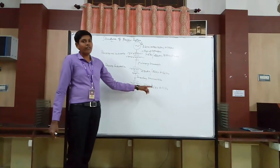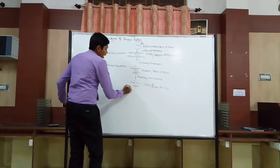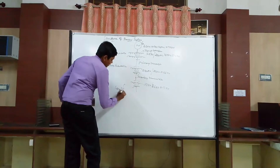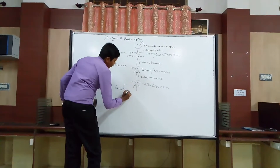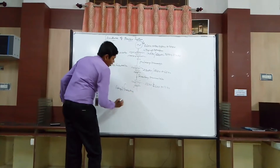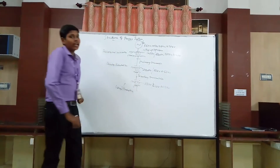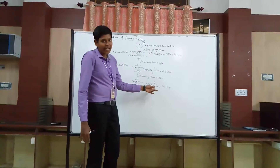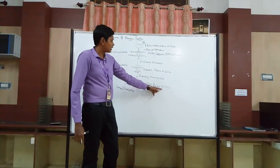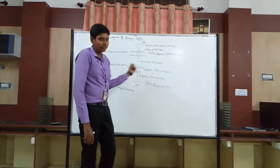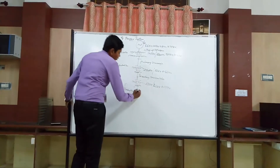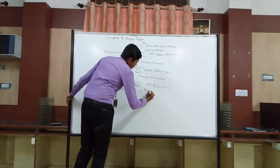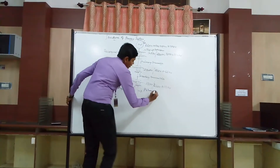This 6.6 KV and 11 KV can be supplied to large industrial consumers. In the large industry, we are having a high power demand, so they directly take 6.6 KV or 11 KV from the power system. This region is called primary distribution.